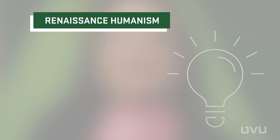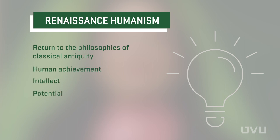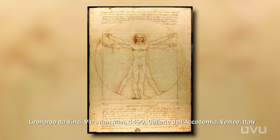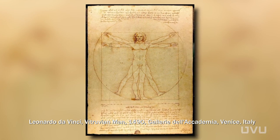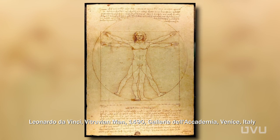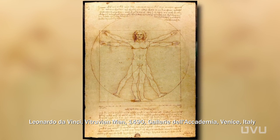Simply put, Renaissance Humanism is a return to the philosophies of classical antiquity. It focuses on human achievement, intellect, and potential. Leonardo da Vinci's Vitruvian Man is a perfect example of humanism because it puts the human right at the center of the natural world, rather than religious concepts.